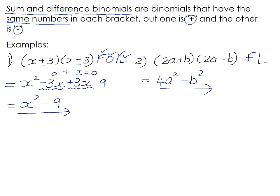So just to recap, if you recognize something as being a sum and a difference, in other words the brackets are the same, 2a, 2a, b, and b, but the one is a plus and the one is a minus, we can actually leave out the outers and the inners and just multiply the firsts and the lasts.